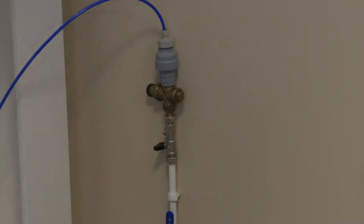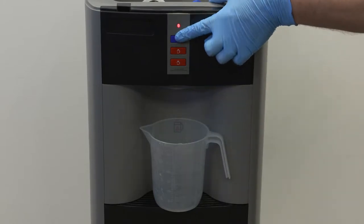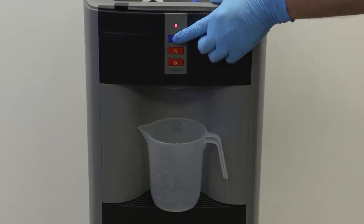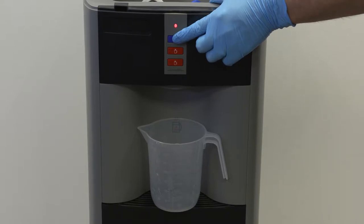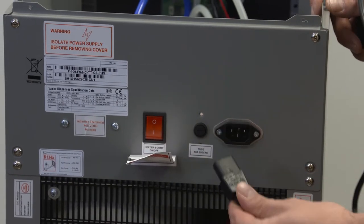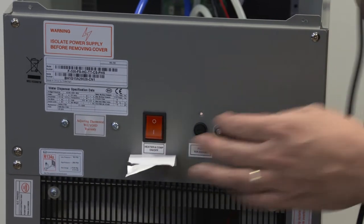Isolate the water supply to the machine. To release any pressure that may have built up, press and hold the cold water button until the water stops flowing from the faucet. Turn off the mains and unplug the machine. The machine is now electrically isolated.